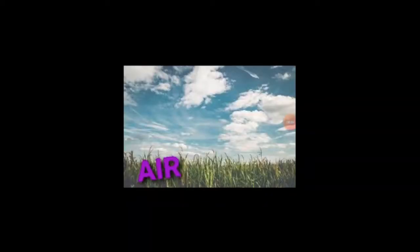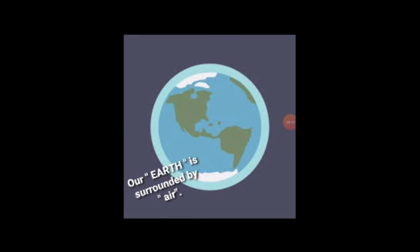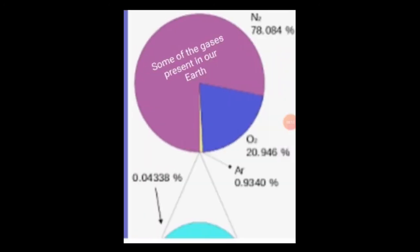Bismillahirrahmanirrahim, assalamu alaikum. Welcome to our science class. Today students, we are going to study our topic: air. Our earth is surrounded by air. Some of the gases present in our earth are nitrogen, oxygen, argon, etc. One of the important and essential gases present on earth is oxygen, which is very essential for living things because we breathe oxygen.